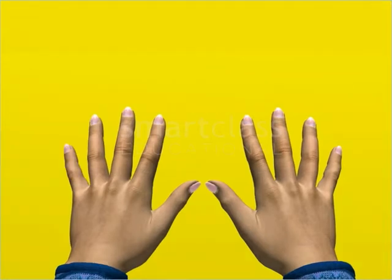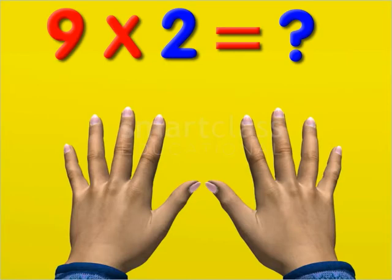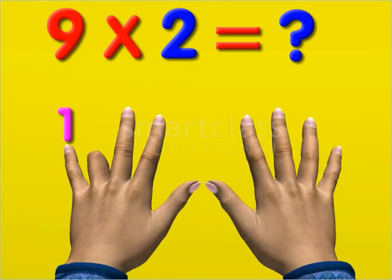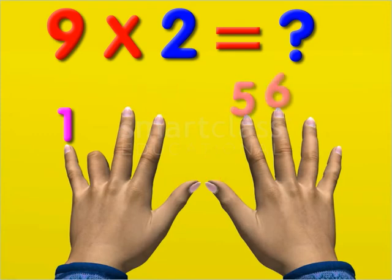Next, to find 9 times 2, bend the second finger of your left hand. The number of fingers to the left of the bent finger is 1, and the number of fingers to the right of the bent finger is 8,